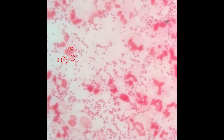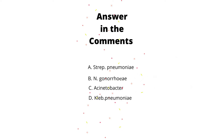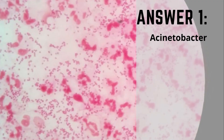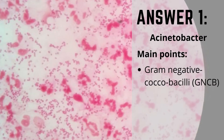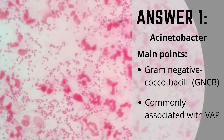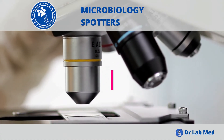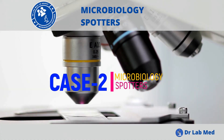If we zoom into this picture, these pairs have a peculiar feature — they appear as figure-eight, and if two pairs are close to each other, they can appear as tetrads. All the highlighted red circles are gram-negative coccobacilli in pairs, so our final answer is Acinetobacter, commonly associated with ventilator-associated pneumonia.